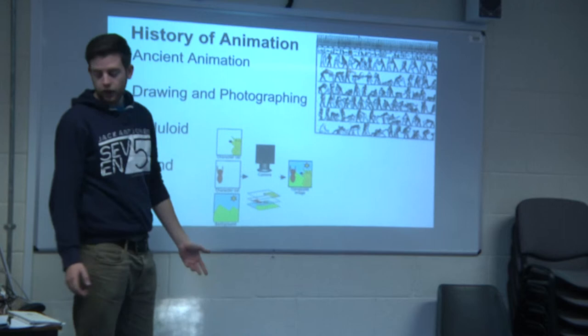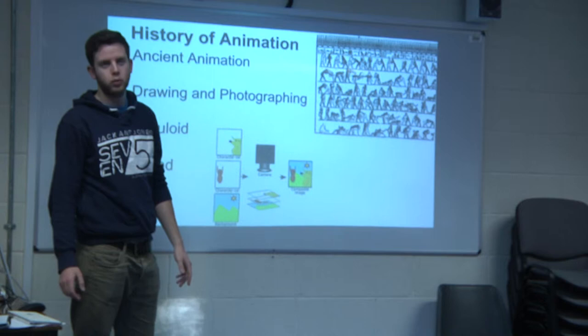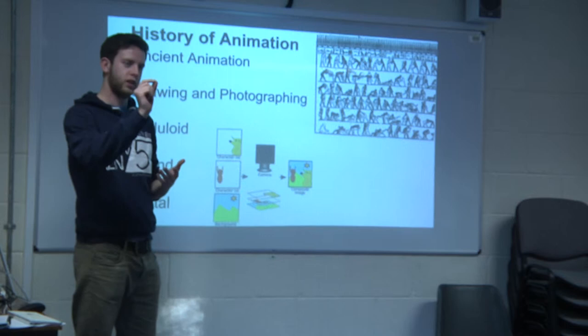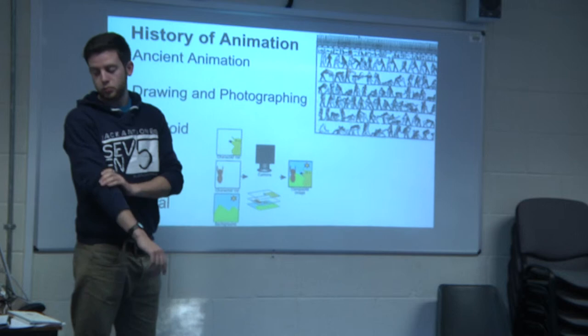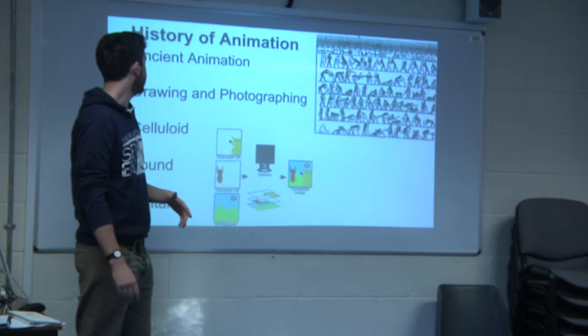More recently there was the Phenakistoscope, made in 1841 by Joseph Plateau. It was a disc with a sequential drawing on it, so when you spun it and looked through a slit, it looked like it was moving — you had people dancing or a dragon eating someone. That was pretty cool, but it's not really what we would know as animation normally.